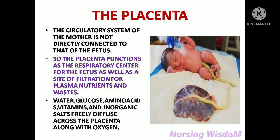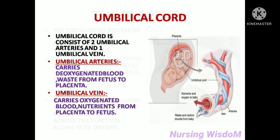The umbilical cord consists of two umbilical arteries and one umbilical vein. The umbilical arteries carry deoxygenated blood from the fetus to the placenta. The umbilical vein carries oxygenated blood and nutrients from the placenta to the fetus.